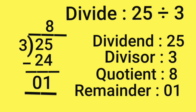Next sum, 25 divided by 3. Say the 3 times table up to 25. 3 eights are 24. 3 9's are 27. We cannot take away 27 from 25. Hence, we will stop at 3 8's.